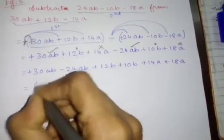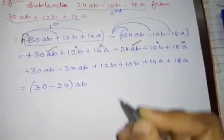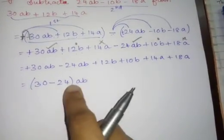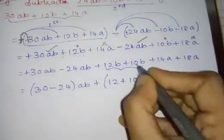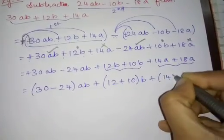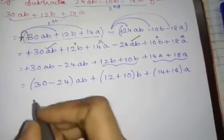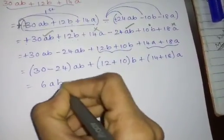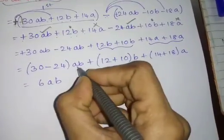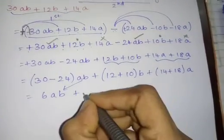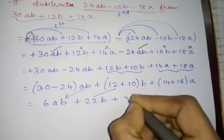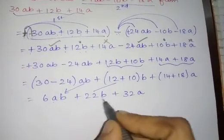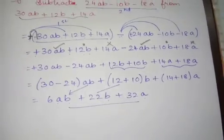Now apply the rule: put coefficients in brackets with the variable outside. (30 - 24) AB + (12 + 10) B + (14 + 18) A. 30 - 24 is 6AB. 12 + 10 is 22B. 14 + 18 is 32A. So the answer is 6AB + 22B + 32A. Since AB, B, and A are all unlike terms, this is your final answer.